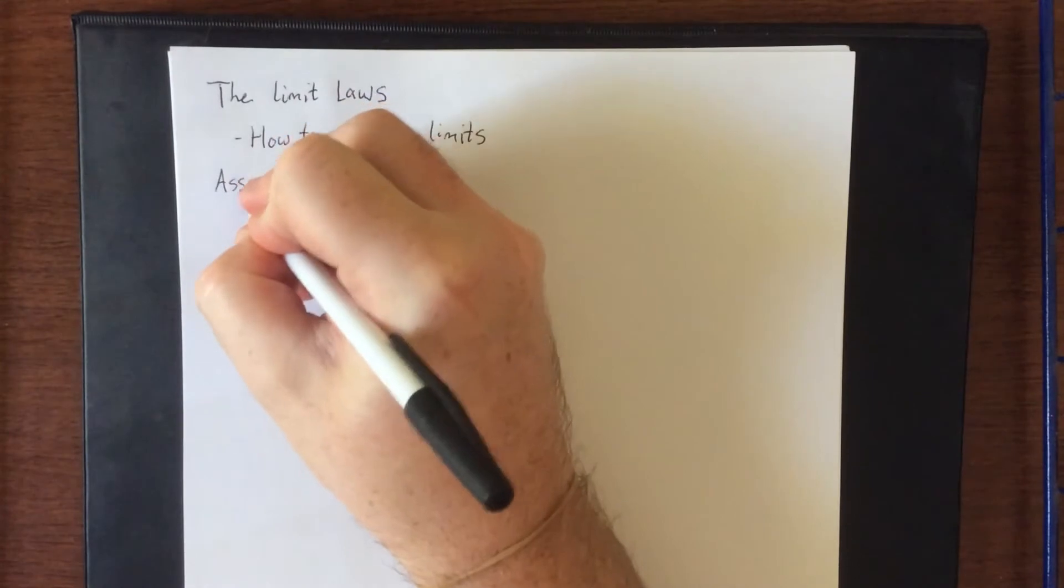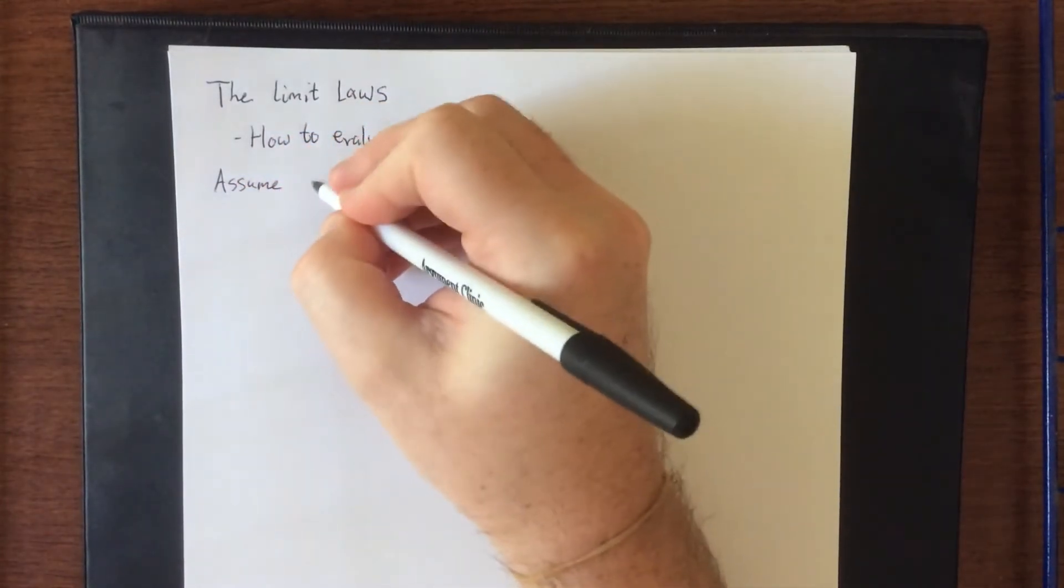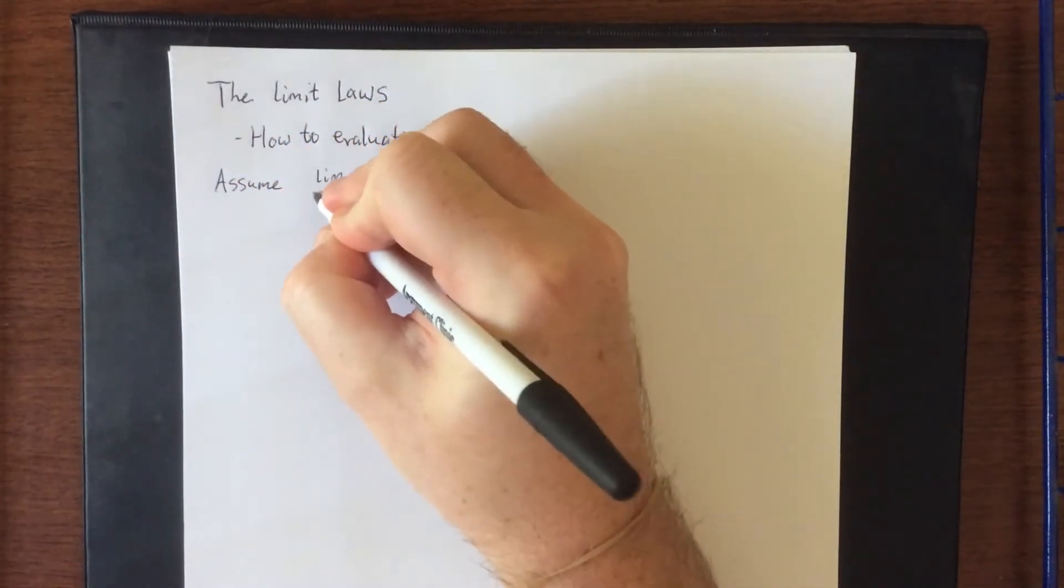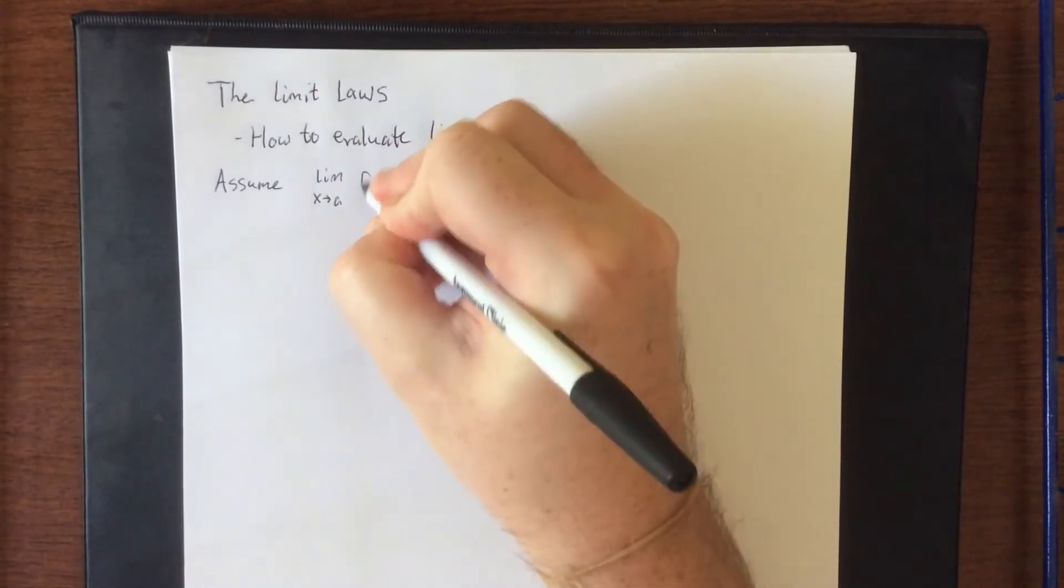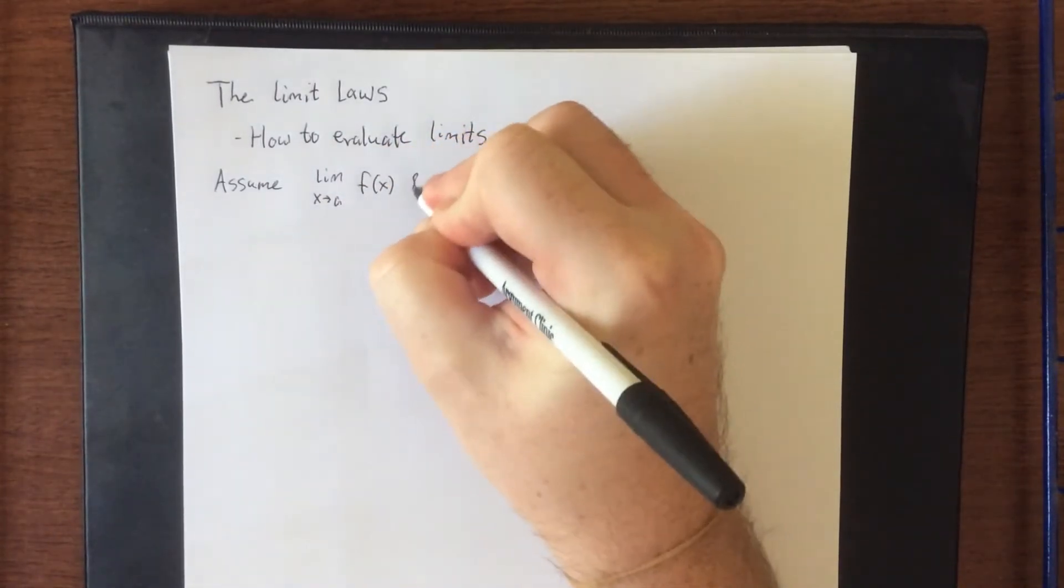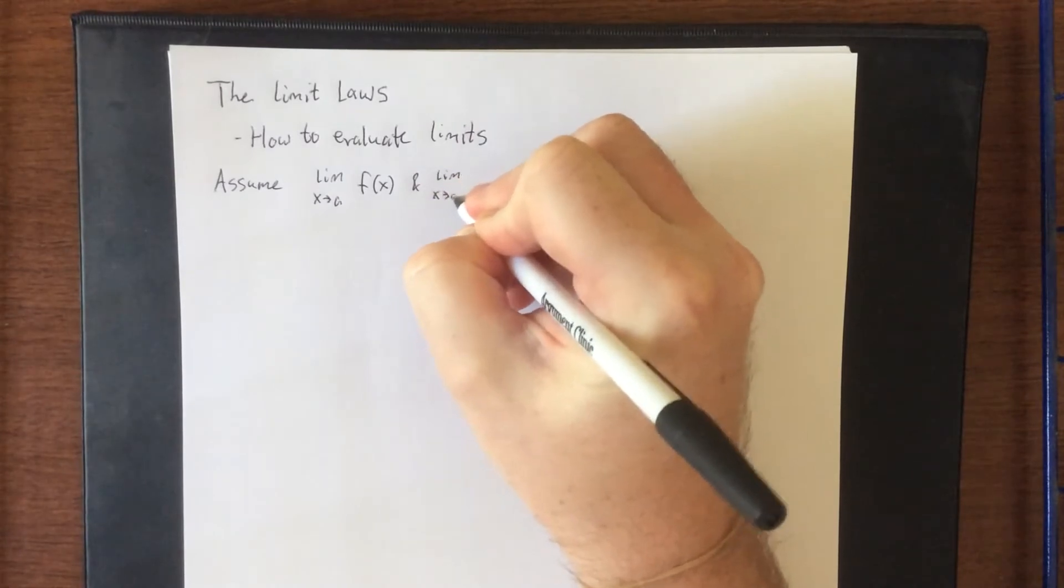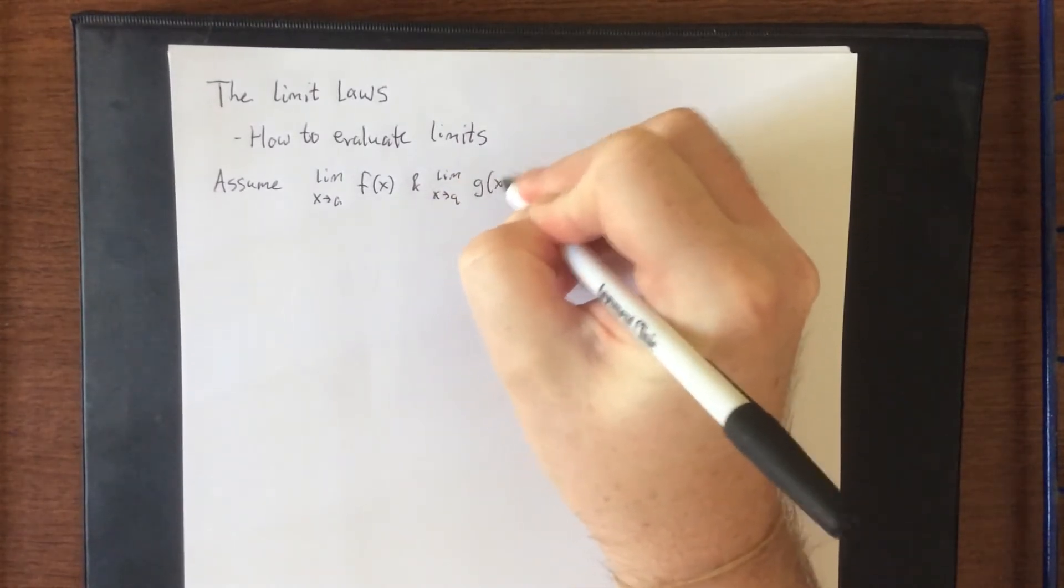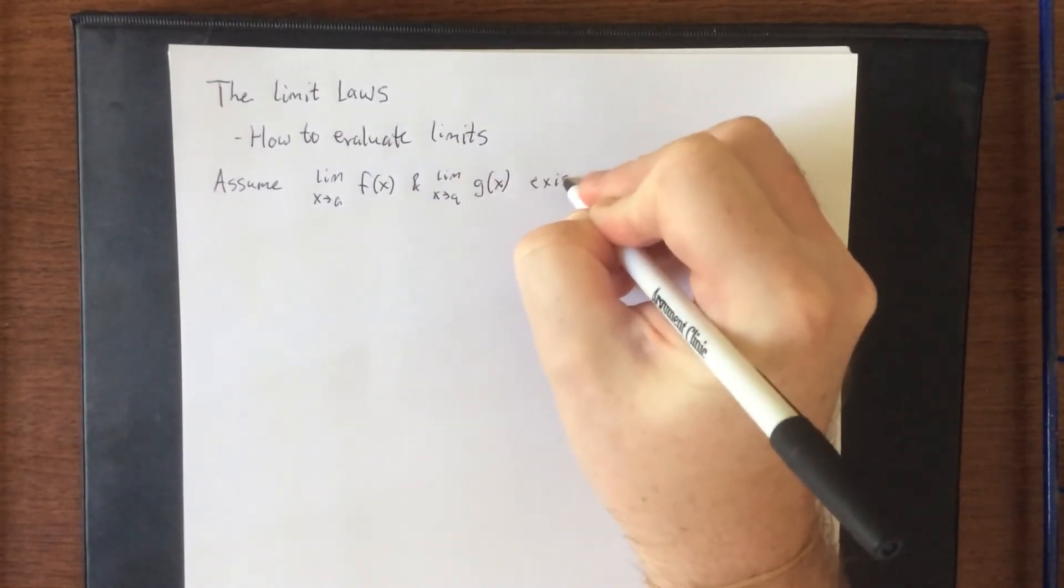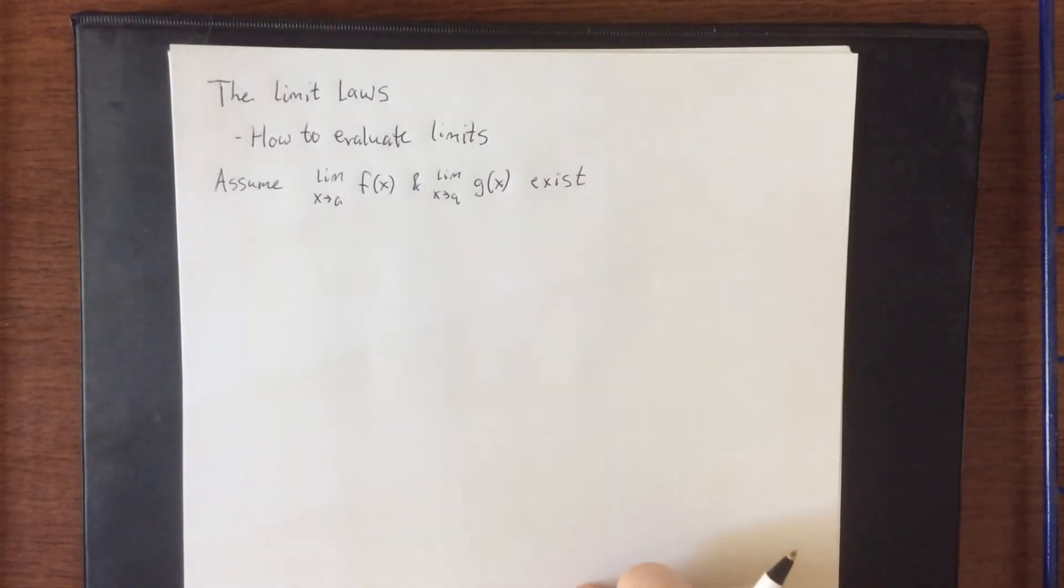So what we're going to do is assume for a moment that the limit as x approaches a of f of x and the limit as x approaches a of g of x both exist. Under the assumption that they exist, what we're going to do is talk about how functions can interact with each other.